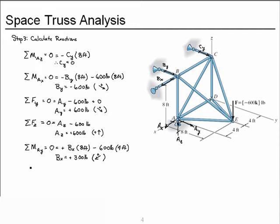Now summing forces in the x direction, taking positive x as positive, we have AX and the 300-pound reaction at BX. Solving for AX, we get minus 300 pounds. We originally assumed it in the positive x direction, and it's not — it's in the other direction. Now we're ready to apply the method of joints.